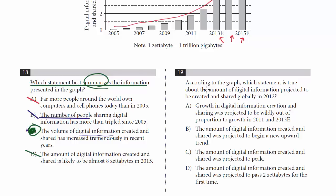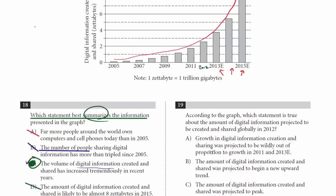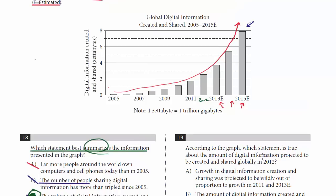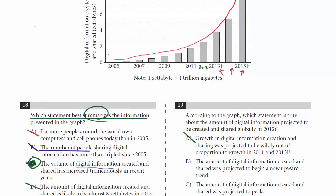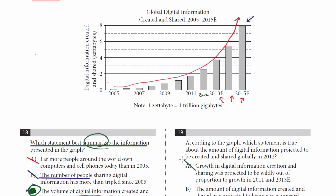Let's look at question 19. According to the graph, which statement is true about the amount of digital information projected to be created and shared globally in 2012? We're looking at the 2012 bar. Choice A: growth in digital information creation and sharing was projected to be wildly out of proportion to growth in 2011 and 2013. Not really — it's following the exponential trend pretty well; it doesn't seem out of proportion. Choice B: the amount of digital information created and shared was projected to begin a new upward trend. Be careful — it is on an upward trend, but is this a new upward trend? No, it's always been increasing. Let's get rid of B.